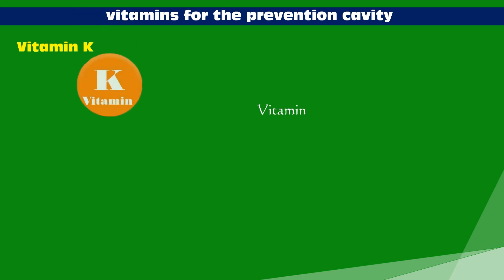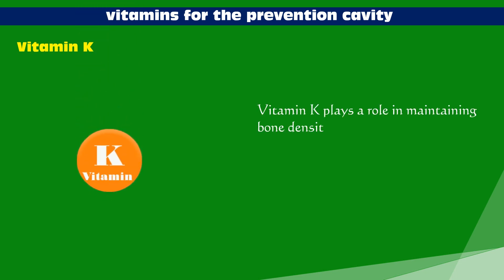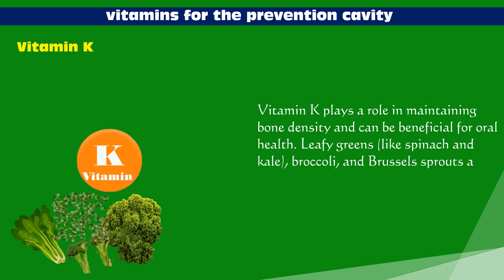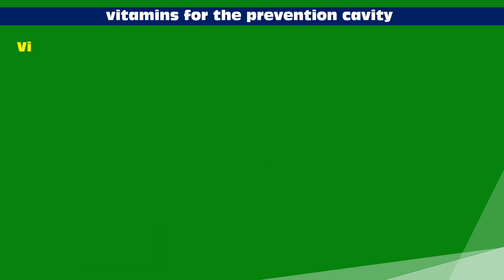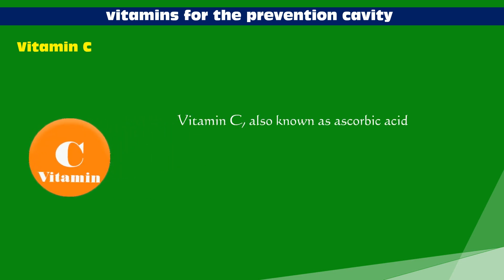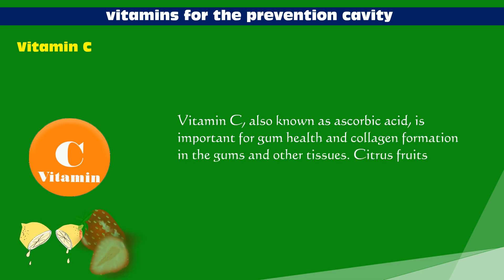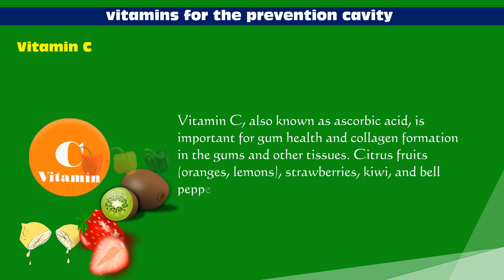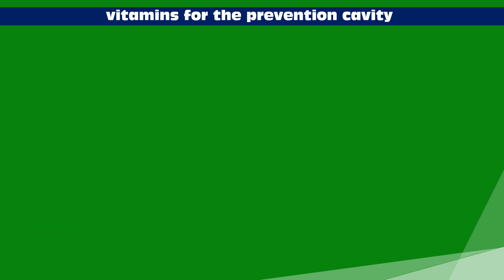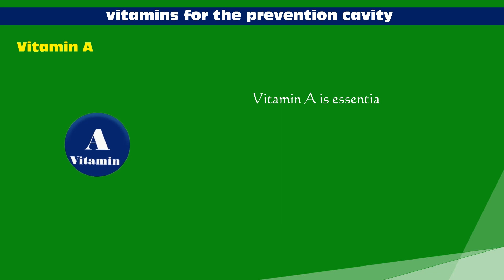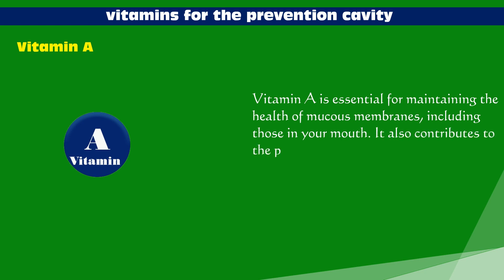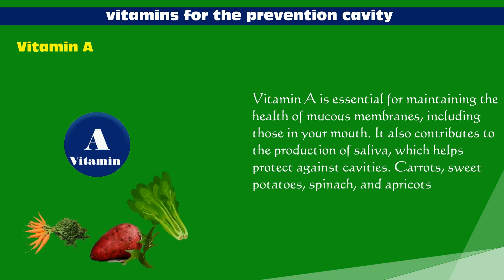Vitamin K plays a role in maintaining bone density and can be beneficial for oral health — leafy greens like spinach and kale, broccoli, and Brussels sprouts are good sources. Vitamin C, also known as ascorbic acid, is important for gum health and collagen formation in the gums and other tissues — citrus fruits, oranges, lemons, strawberries, kiwi, and bell peppers are rich sources. Vitamin A is essential for maintaining the health of mucous membranes in your mouth and contributes to saliva production, which helps protect against cavities — carrots, sweet potatoes, spinach, and apricots are good sources.